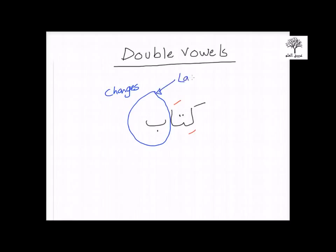The last letter is always subject to change. The changes that take place are either two Dhammas (double Dhamma), two Fathas (double Fatha), or two Kasras. This change in vowels is very important in understanding how sentences in the Arabic language are structured, and hence how this affects the translation of each sentence. This is what we're going to be focusing on throughout the 17 lessons, inshallah.